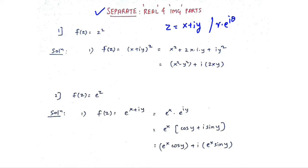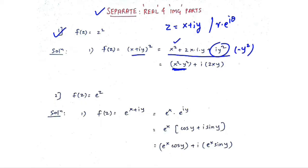We are basically trying to separate the real and imaginary parts of a function. Starting with question 1: f(z) = z². Replace z by x plus iy to get (a+b)² format, which expands as a² + 2ab + b². Collecting terms: x² and minus y² form the real part, while plus i times 2xy is the imaginary part. So the real part is x² minus y² and the imaginary part is 2xy.